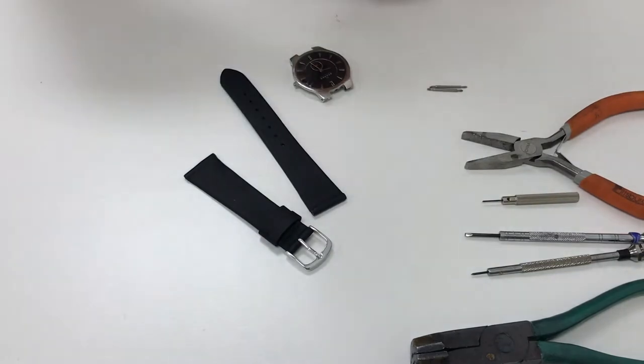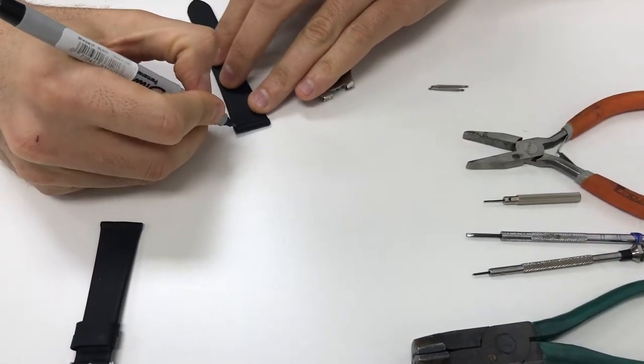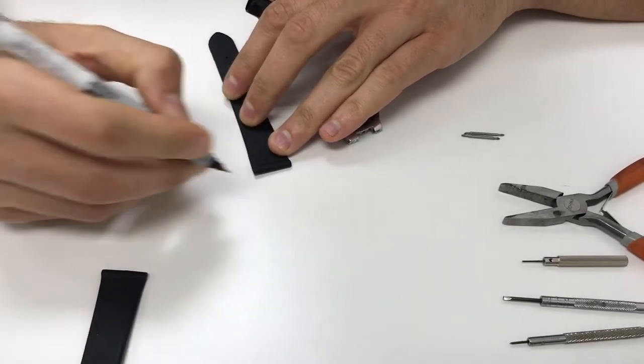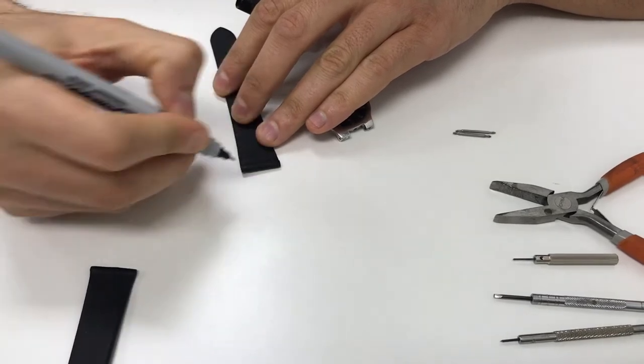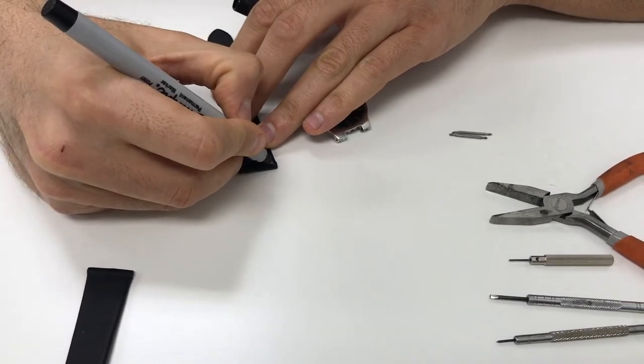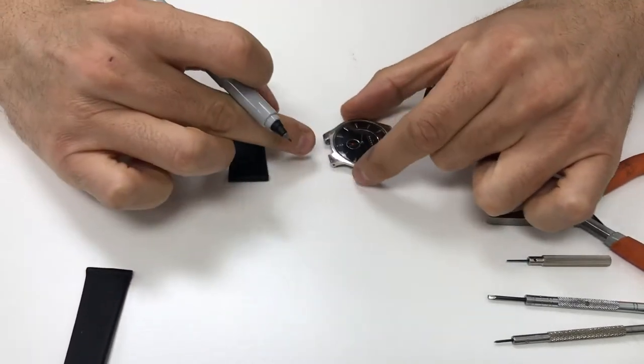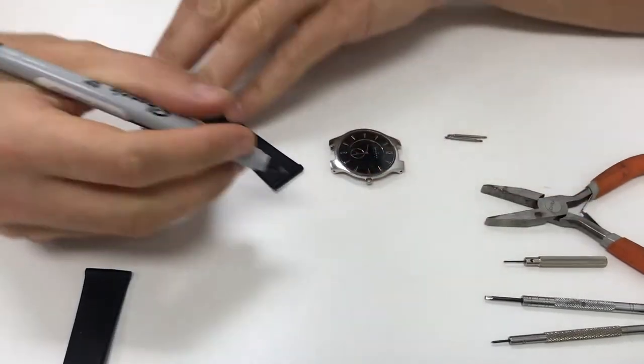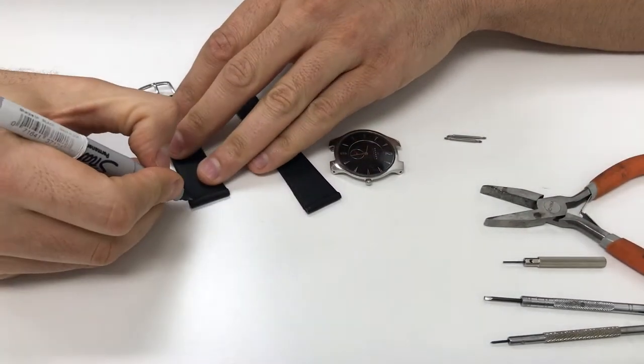So what I'm going to do here is with a black sharpie I'm going to mark one millimeter on the edge right here so I can know where to begin cutting. And it doesn't have to be exact because essentially it's going to be underneath and the case is going to block everything. You just want to get an approximate size. So I'll go ahead and mark that here and here.